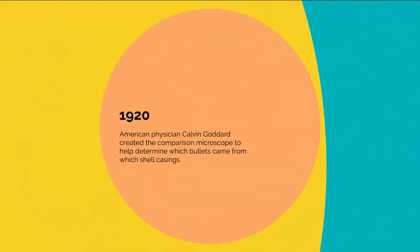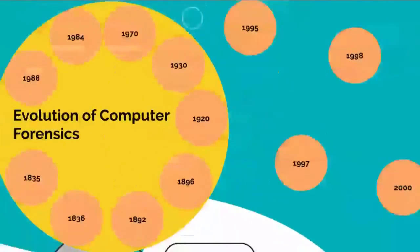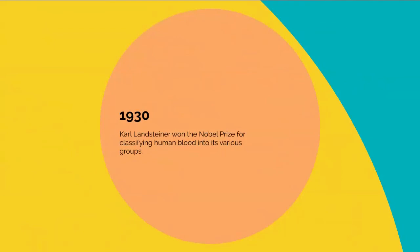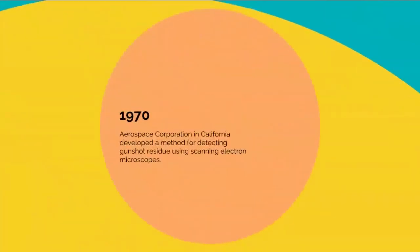In 1920, American physician Calvin Goddard created the comparison microscope to help determine which bullet came from which shell casing. In 1930, Carl Landsteiner won the Nobel Prize for classifying human blood into various groups. In 1970, the Aerospace Corporation in California developed a method for detecting gunshot residue using scanning electron microscopes.